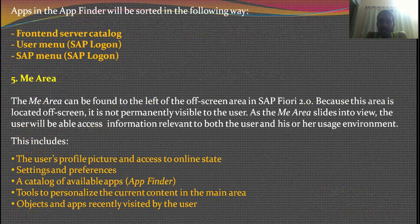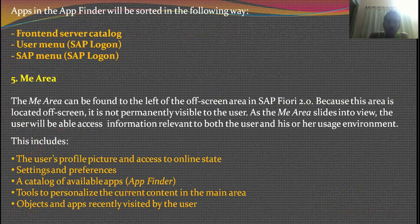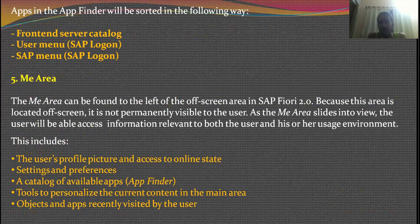The next feature is the Me Area, which is found in the off-screen area. You will not see it permanently, but when you swipe or slide to the left, you can access information relevant to you. This includes the user's profile picture, access to online state, settings and preferences, a catalog of available applications via the app finder, tools to personalize your look and feel, and the objects and applications you recently worked on. Basically, this is a personalized area with user information and frequently used applications.